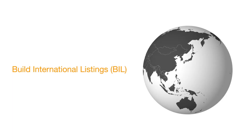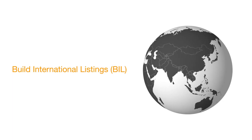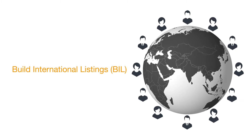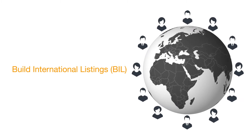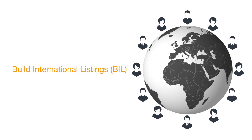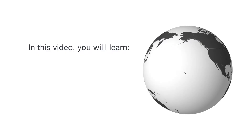We understand the complexity of managing an international business. To easily and quickly reach new global customers with Amazon, you can use a self-service tool called Build International Listings, or BIL. BIL enables you to quickly add offers to international marketplaces. Then, based on the rules you set, BIL automatically synchronizes offer prices across marketplaces.